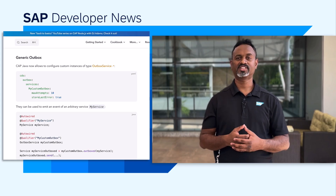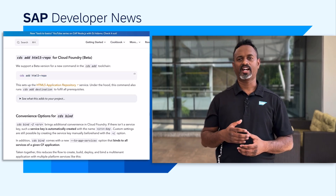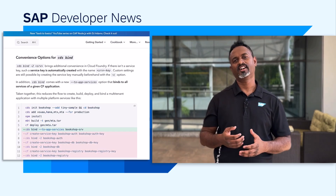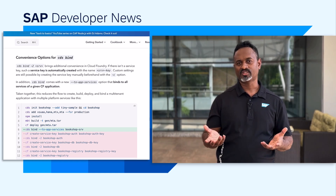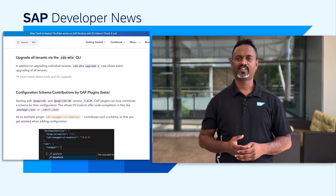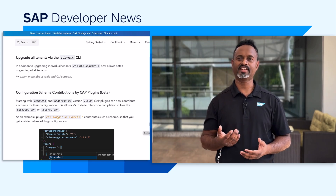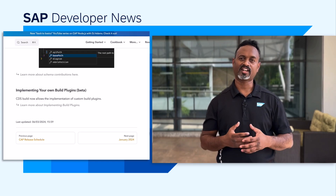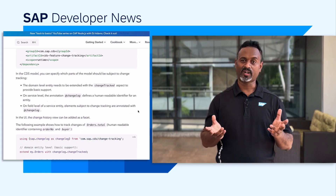Finally, we have updates from tools, where we have a new snippet for annotate statements. There is support for a new command in the CDS app to add HTML5 application repository. There are new convenience options for the CDS bind command — service keys are now automatically created with this command. In addition, CDS bind comes with a new to-app-services option that binds to all services of a given Cloud Foundry application. You can now upgrade all tenants at once via the CDS MTX CLI. Starting with version 7.6.0 of CDS and CDS DK, CAP plugins can now contribute a schema for their configuration. CDS Build now allows the implementation of custom build plugins. To know more about these updates, please visit the CAP documentation page. Links can be found in the description below.